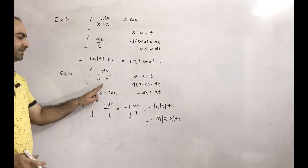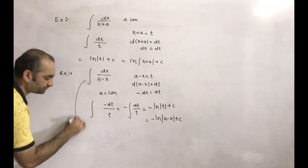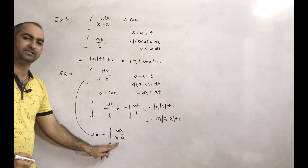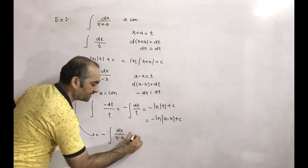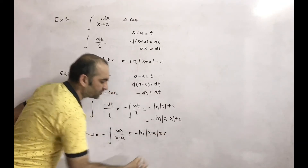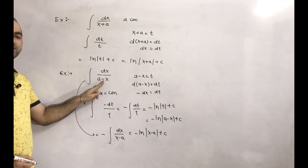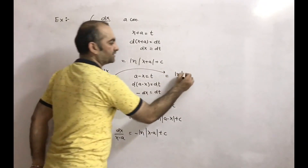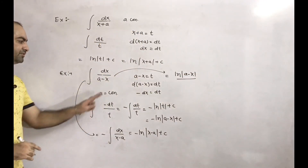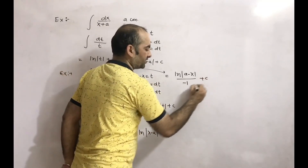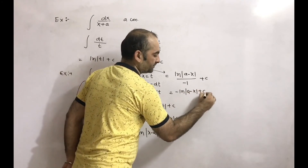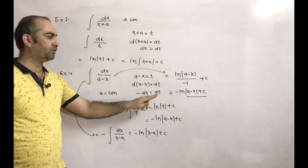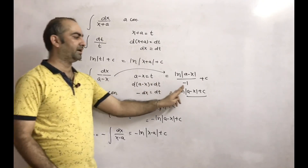One more thing we can do: take minus common directly, giving minus of integration of dx divided by (x-a). Here also we can take (x-a) common. So this gives -ln|x-a| plus c. Or, doing it directly: coefficient of x in (a-x) is minus 1. So ln|a-x| divided by coefficient of x (which is -1) plus c gives -ln|a-x| plus c. So we can use substitution, take minus common, or divide directly by the coefficient of x.